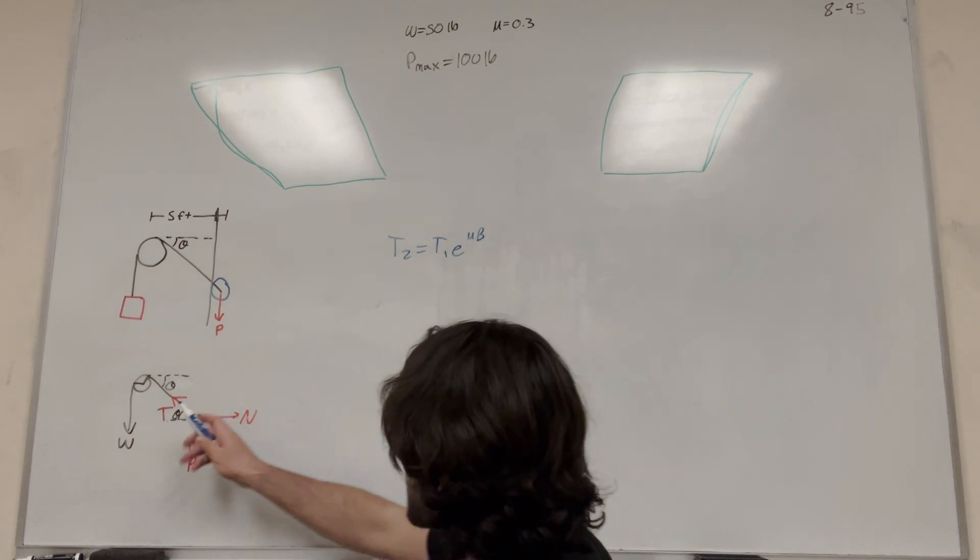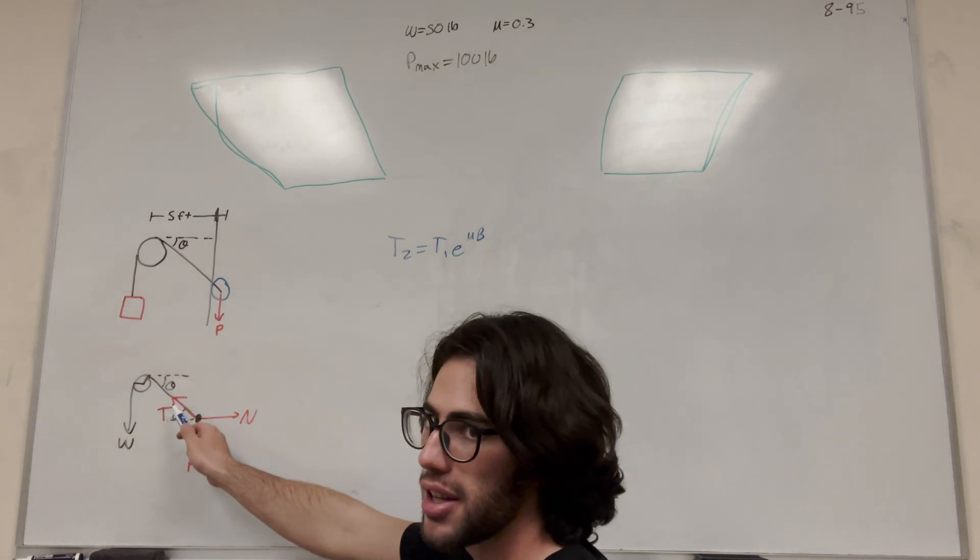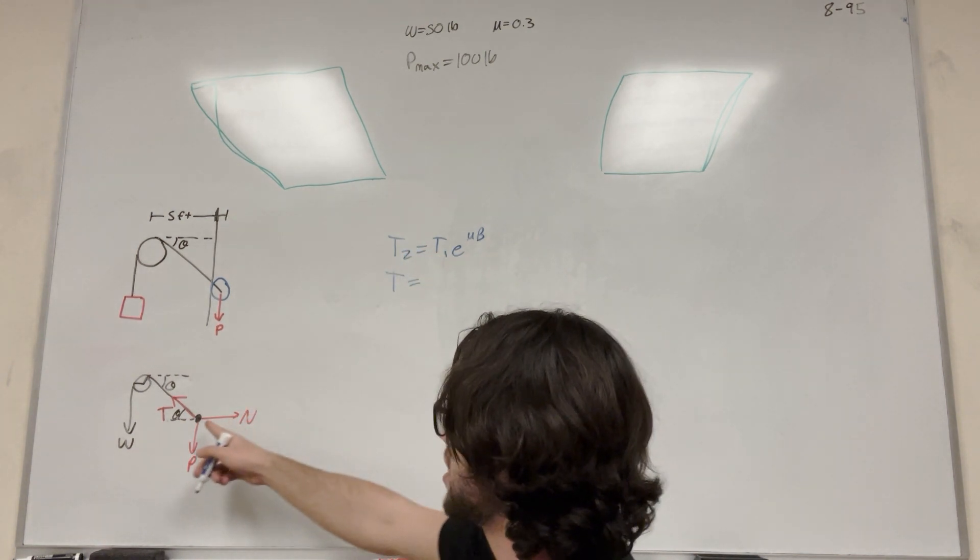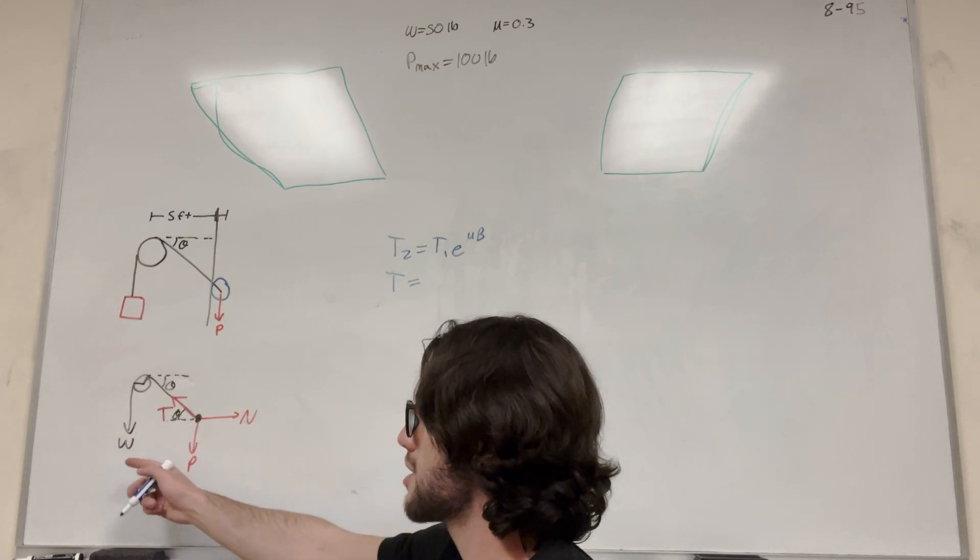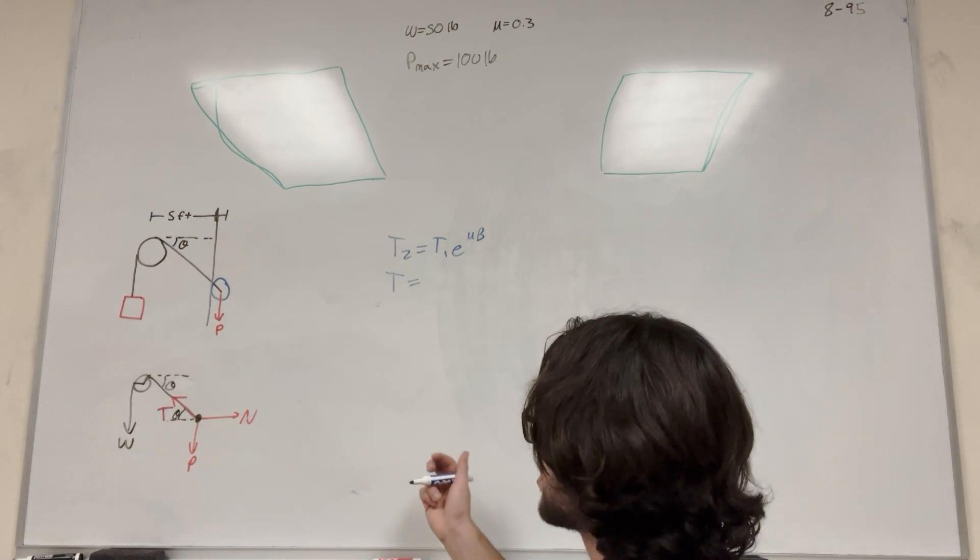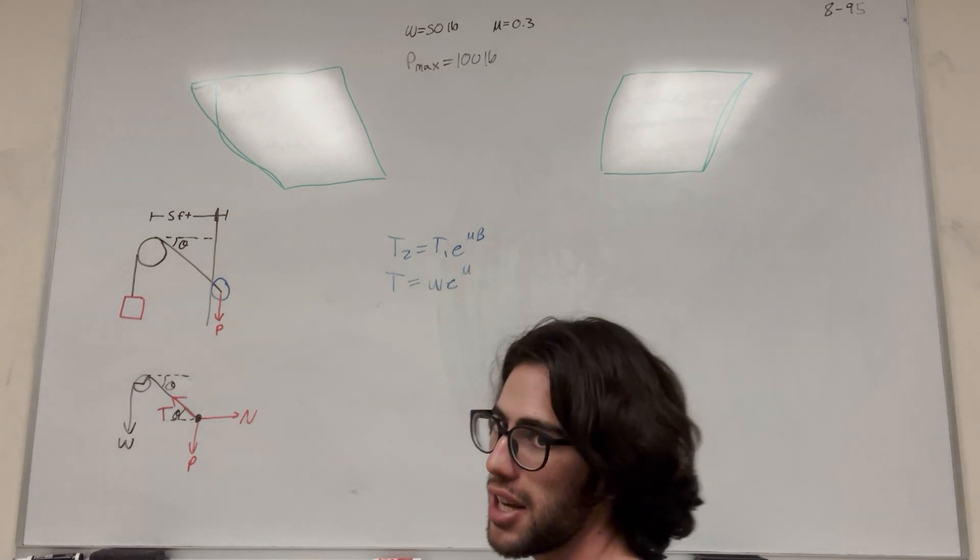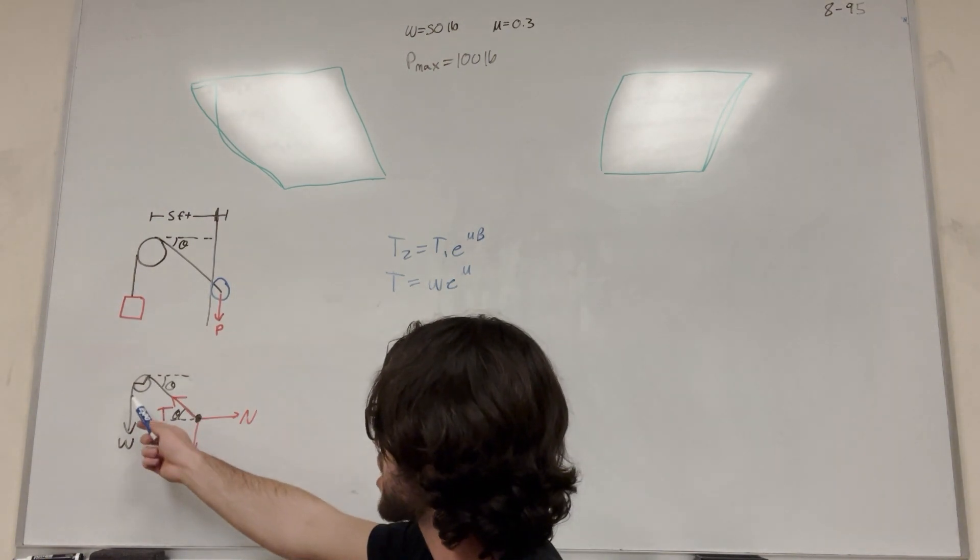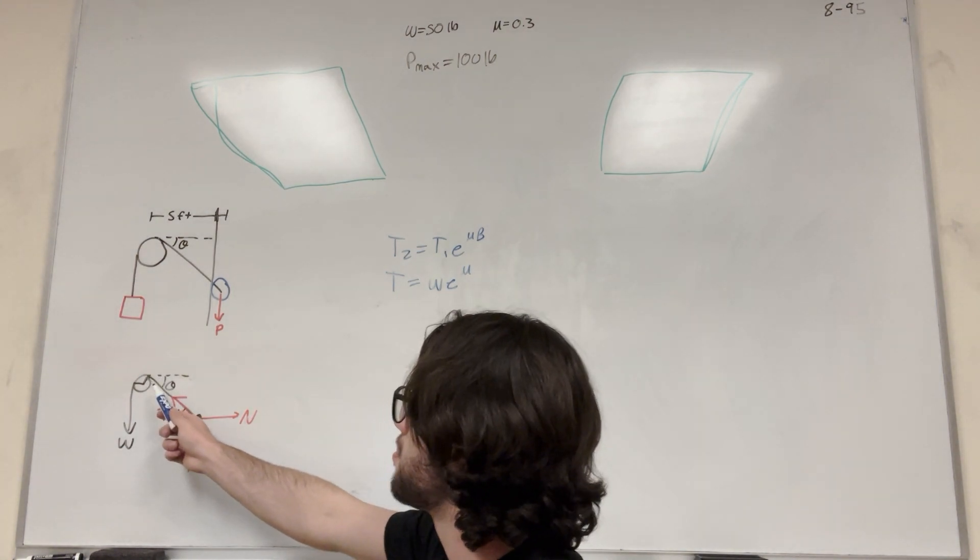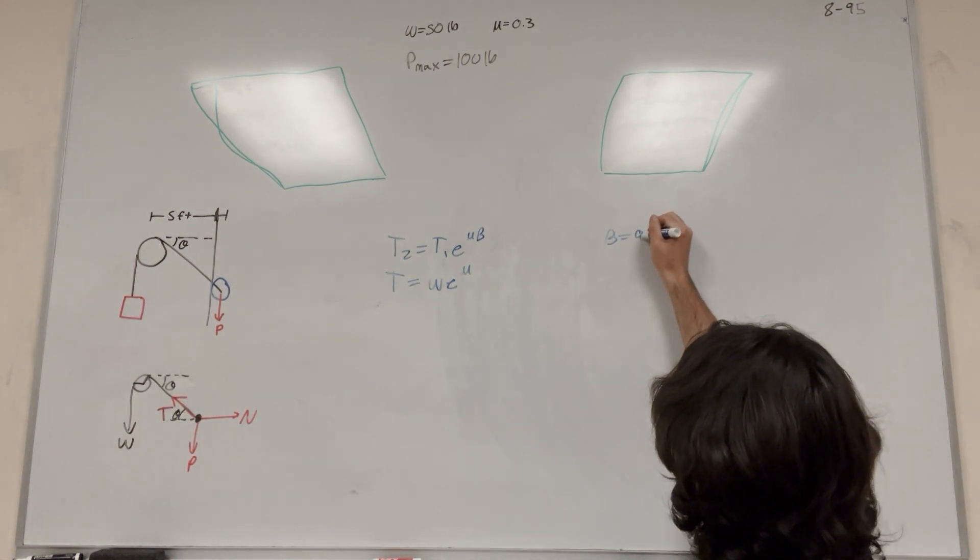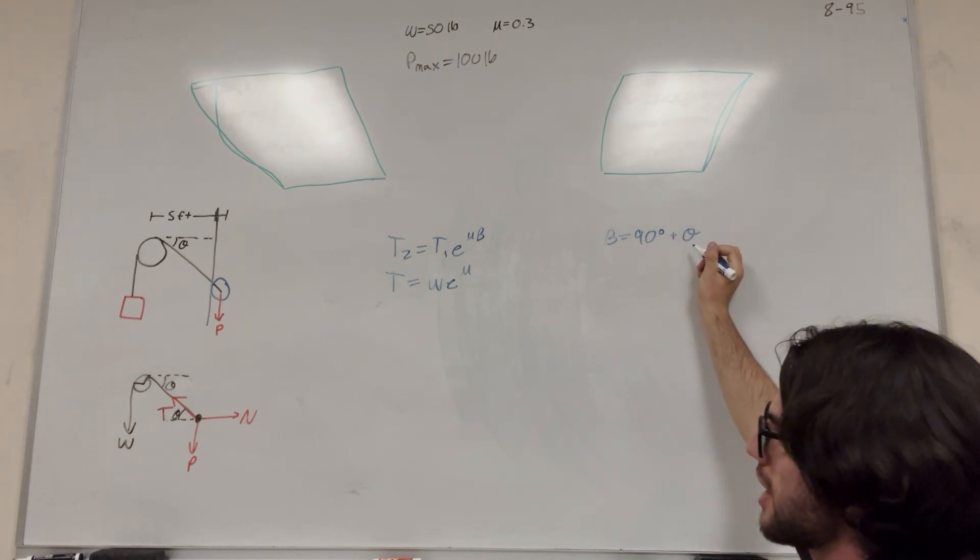So we know that tension 2 is going to be our tension here. This tension is going to be on the left side of our equation. That's because this is the greater tension and this is the lesser tension. We know that this tension is going to be greater than this because it's maximum. So w is going to go here e the coefficient of static friction and then beta is our angle. So the angle that this goes over is 90 degrees plus whatever this theta is. So beta is equal to 90 degrees plus theta. Beta is what we're looking for. That's what we're trying to solve.